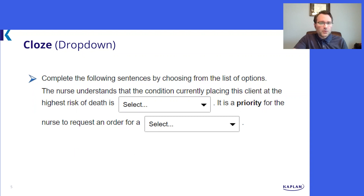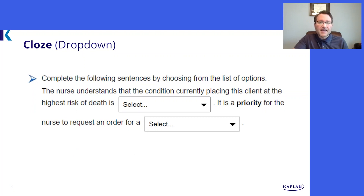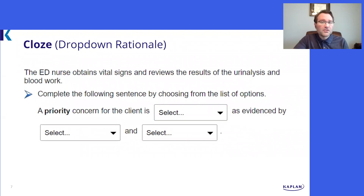This closed question contains two independent drop-downs, one per sentence. What you see on the screen is not two closed drop-down questions. Instead, this is a multi-part single closed item. Per question, you can author up to five sentences with five drop-downs in total.